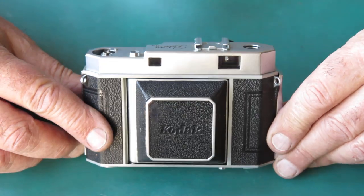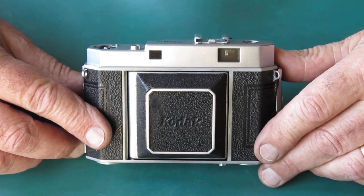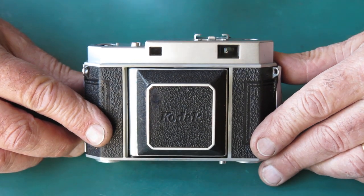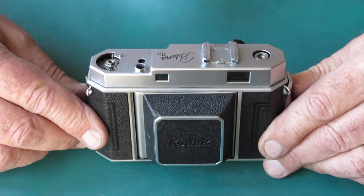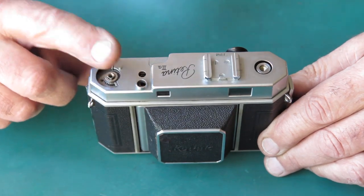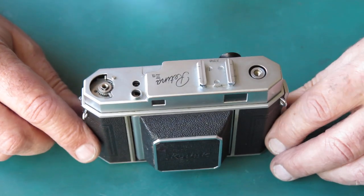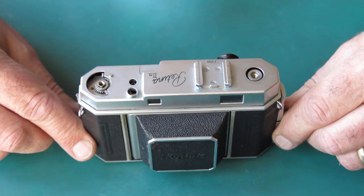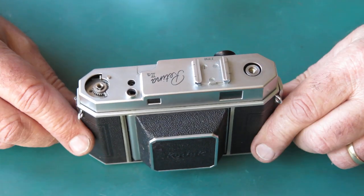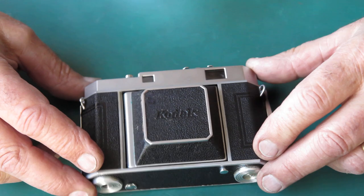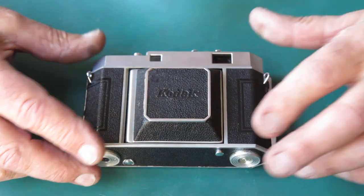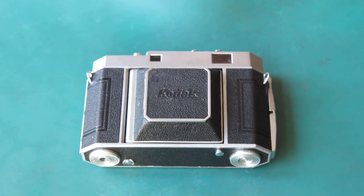The owner decided to clean the rangefinder and apparently had some success at that, but had big problems when it came to putting everything back together, which I presume means that a lot of things were disturbed but should have been left alone. So what can we do with this? Let's have a quick look over it first.